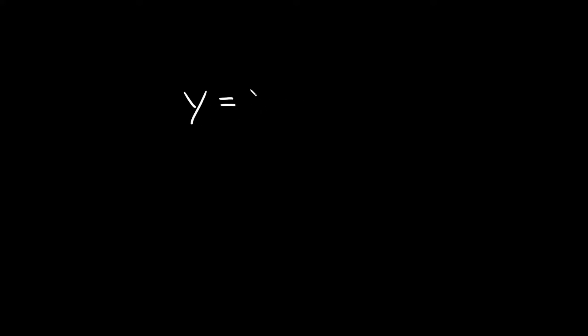So first of all, let's start with direct variation. The direct variation equation is y is equal to k times x. So these variables — x and y — they can change; they could be any variables really, like a and b, m and n. But the main thing is that it's in this form. And normally you're going to have a k here — sometimes it's going to be an a, but it's usually a k — and this is just the constant of variation.